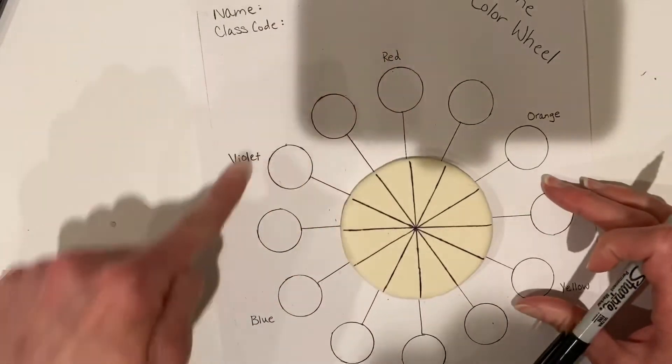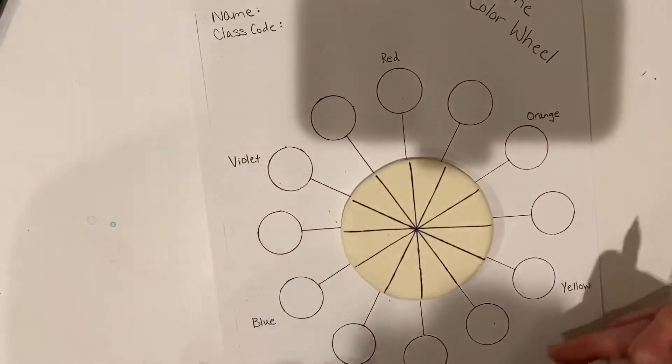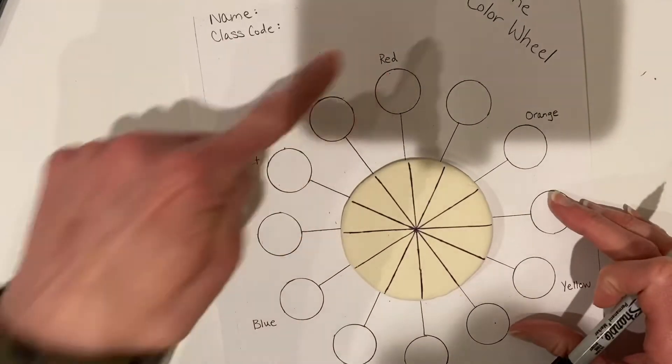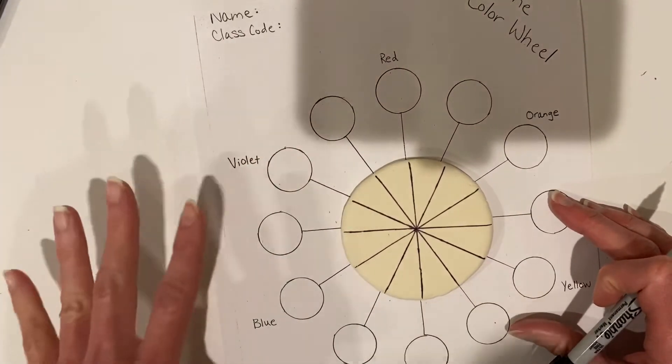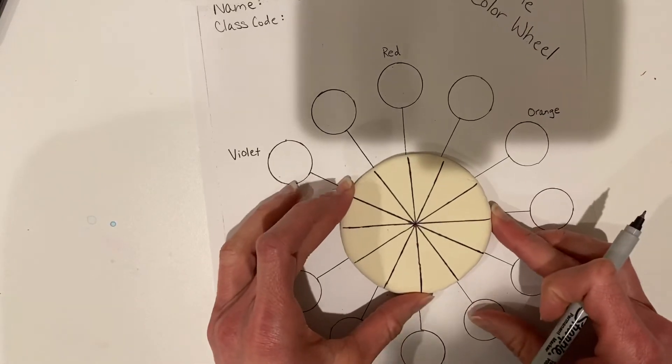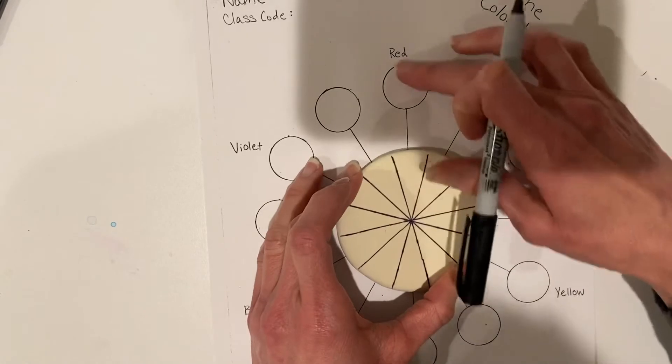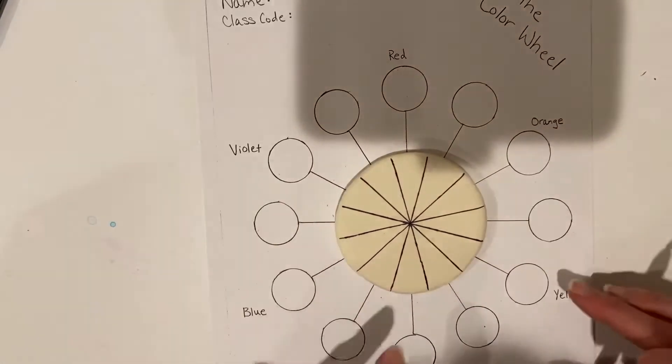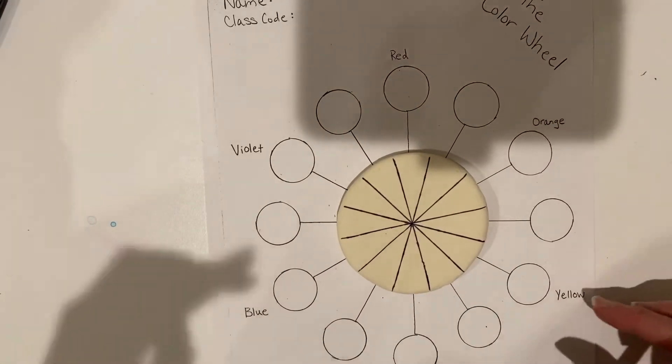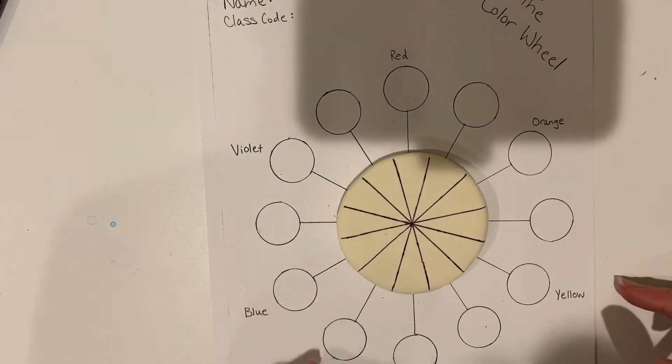Then you can use this sheet or this diagram here to help you. The primary and secondary colors are already written in. You just have to kind of turn your color wheel a little bit if you want it to line up with the colors that are written here.